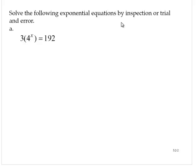Well, the first thing I would do here is try to make this look like an equation I know how to solve. I know how to solve 4 to the x equals something by inspection. And so what I see here is I've got 4 to the x being multiplied by 3, so I'm going to divide both sides by 3.